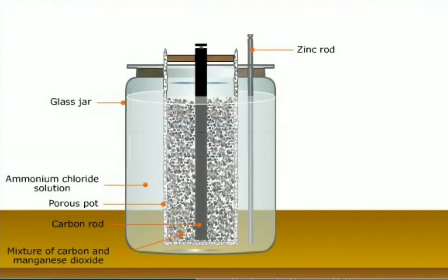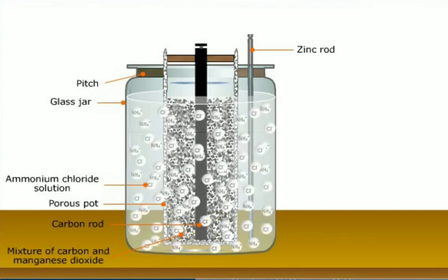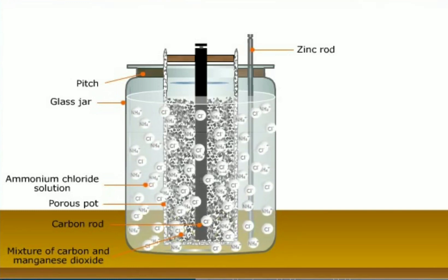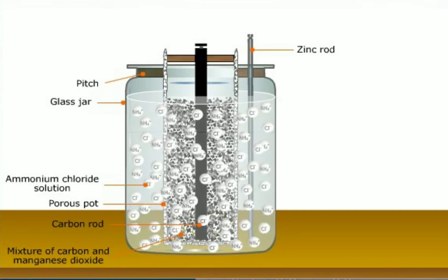The mouth of the glass jar is sealed with pitch so that the ammonium chloride does not seep out. Let us now look at the chemical reactions taking place inside the cell to understand how the electrodes get charged.